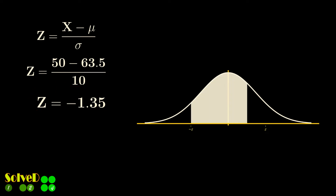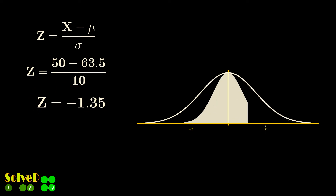For the normal curve, the area to the right of minus Z is the same as the area to the left of plus Z. So we can use the table of positive Z values of the standard normal curve.